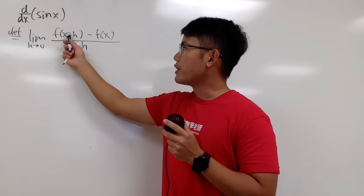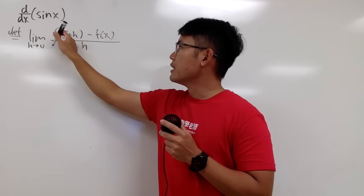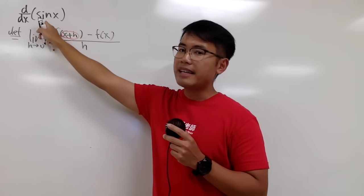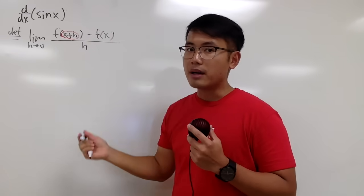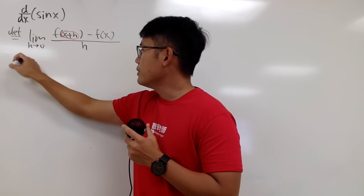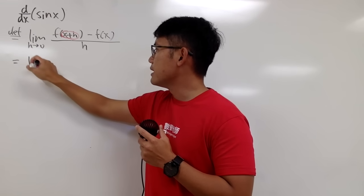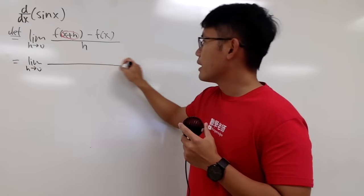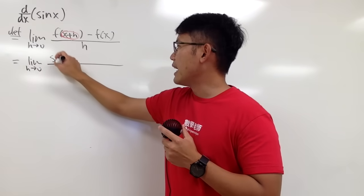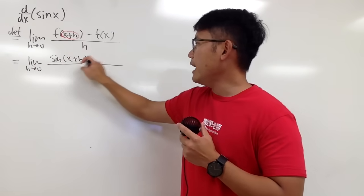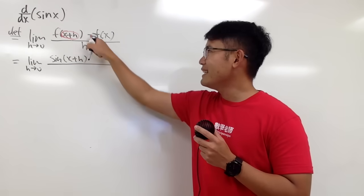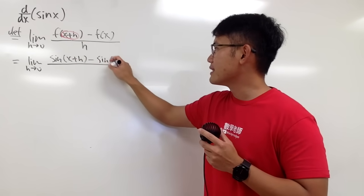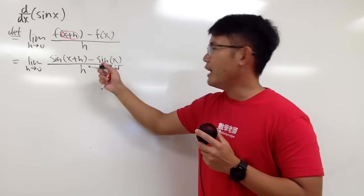We just have to plug in x plus h into the x inside the sine. That would be the first part. So this is equal to the limit as h goes to 0 of sine of x plus h, minus f of x, which is that original sine of x, all over h.